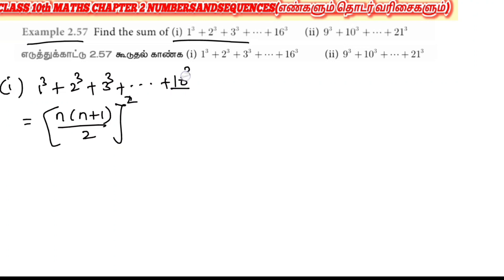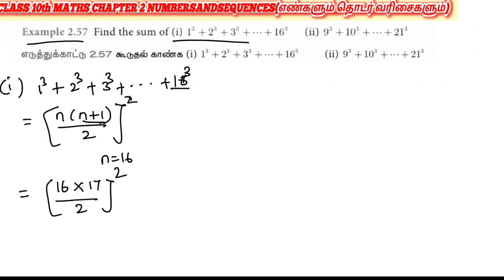Here n is equal to 16. So we compute 16 into 16 plus 1 by 2, that is squared. This gives us 16 into 17 by 2, which simplifies — dividing 16 by 2 gives 8 — so we get 8 into 17, to the whole square.